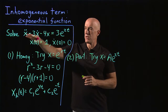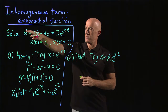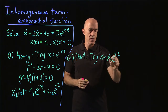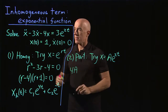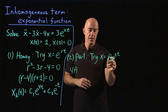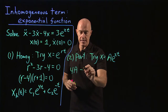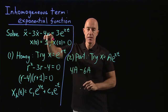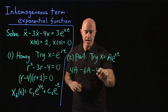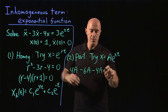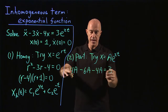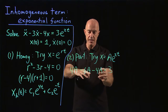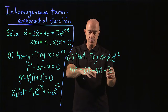Let's substitute in and cancel the e to the 2t term. x double-dot gives us 4a; minus 3x-dot gives minus 6a; minus 4x gives minus 4a, and that equals 3 on the right-hand side. So 4a minus 4a is 0, leaving minus 6a equals 3, which gives a equals minus 1 half.